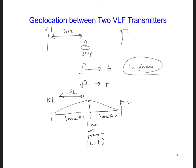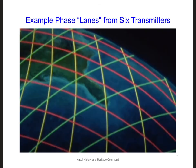We can refine our position further by knowing the percent phase difference between the signals within a lane. If we extrapolate this idea globally, we need at least two or more detectable LOPs near the receiver to determine position. Here is a diagram of three sets of LOPs — each requiring two transmitters — so six transmitters total are required to create this grid of LOPs and phase lanes.